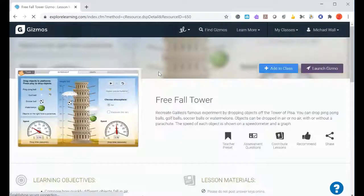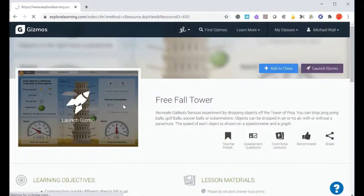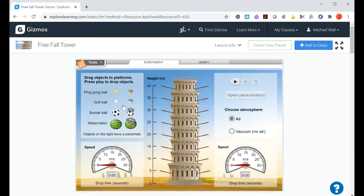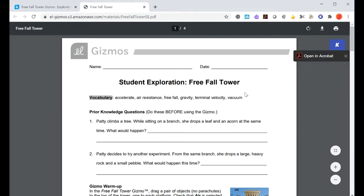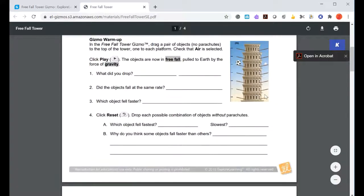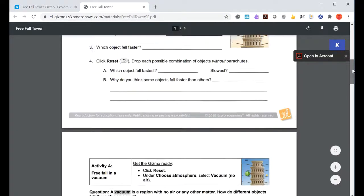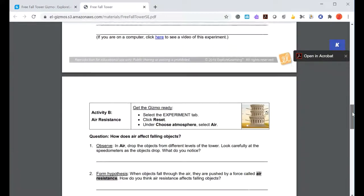We'll click to launch the gizmo. As always, under the lesson info, you have choices for your exploration sheet: PDF, Word, or Google Doc. Here is the exploration sheet. This tells you what to do, it also has places for you to record your answers, and you can also record some data for the activities.